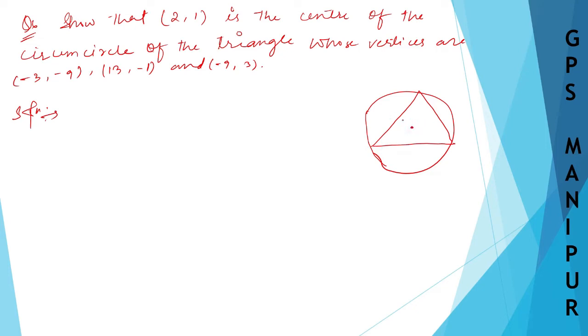So we need to show that this center, (2,1), is the center of the circumcircle of a triangle whose vertices are: A is given to be (−3,−9), B is given to be (13,−1), and C is given to be (−9,3).